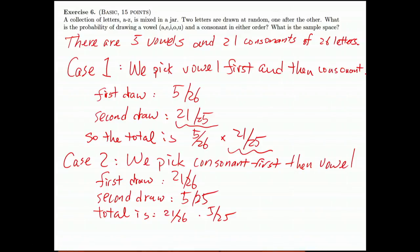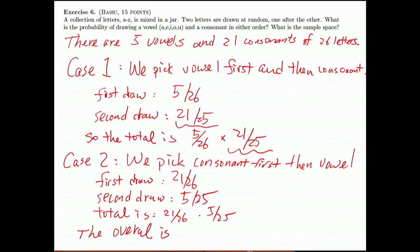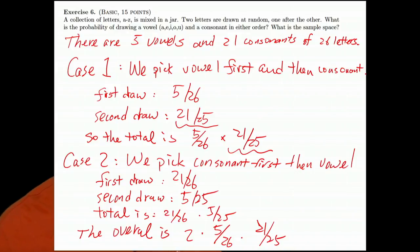Therefore, we need to combine two cases. So the overall total is 21 over 25. So the total is 22 over 25, which is 0.32. You just add case 1 and case 2 then you got this answer.